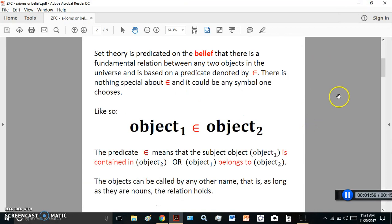So, set theory is predicated. Now, what is a predicate? A predicate is actually a noun which refers to the verb in a sentence. So they're predicated on the belief that there is a fundamental relation between any two objects in the universe, and they denote that predicate by some symbol. In this case, they chose the Greek letter Epsilon, or what you see here in the red font. This particular symbol is chosen to be the predicate, but it could be any symbol.